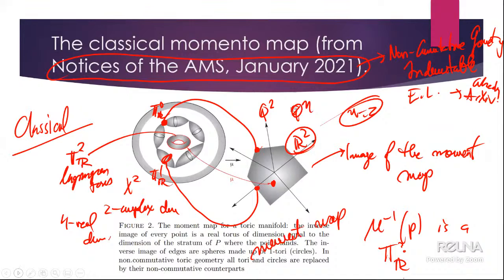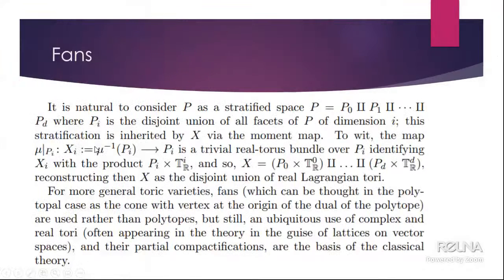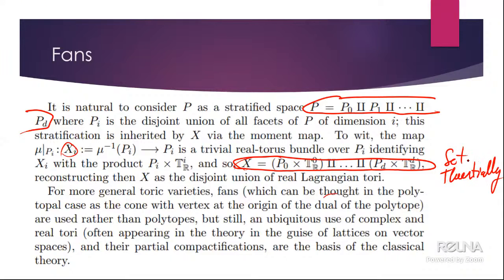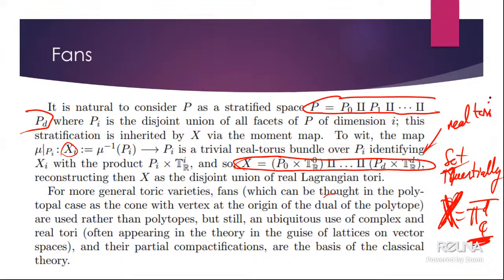There's a whole lot of tori. The polytope being stratified means the inverse images of different faces are fibrations over those faces of tori of various dimensions. This realizes the toric variety set-theoretically as a disjoint union of tori. And X is the compactification of a complex torus — so there is a complex torus and many real tori. That's how the moment map looks in the classical story.